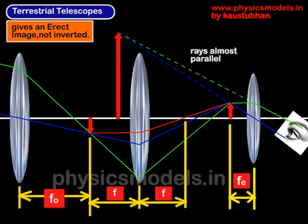The magnified arrow, which is erect, demonstrates the enlarged image of the object on which the telescope is aimed. Incidentally, terrestrial telescopes are used to see objects on Earth, while astronomical telescopes are used to see very distant objects in space, like planets and stars.